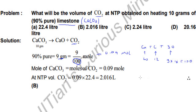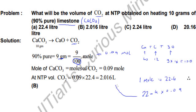Since CO₂ is a gas, by Avogadro's law, one mole of any gas occupies 22.4 liters at NTP. So 0.09 moles will occupy 22.4 × 0.09 = 2.016 liters, which is option B. I hope you understood the video, thanks for watching.